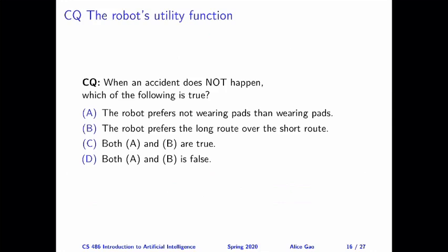Here's a clicker question. When an accident does not happen, which of the following is true? The first statement is that the robot prefers not wearing pads over wearing pads. The second statement is that the robot prefers the long route over the short route. Think about this yourself and then keep watching for the answer.